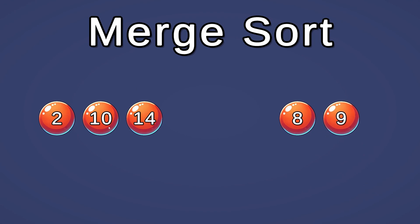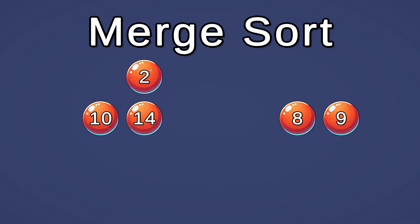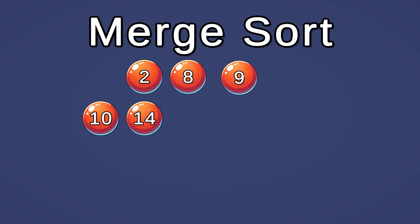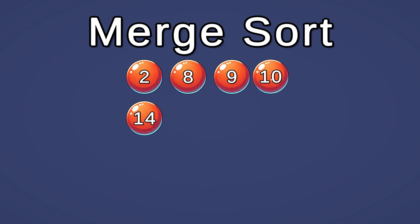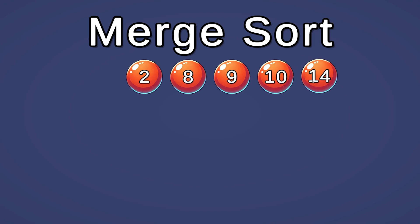Now we have two arrays left that we need to merge. We compare 8 with 2 — 2 is smaller so it goes first. Then 8 and 10 — 8 is smaller so 8 goes next. Then 9 and 10 — 9 is smaller so that goes next. Then we have 10 and 14. And just like that we have sorted our array using the merge sort algorithm.